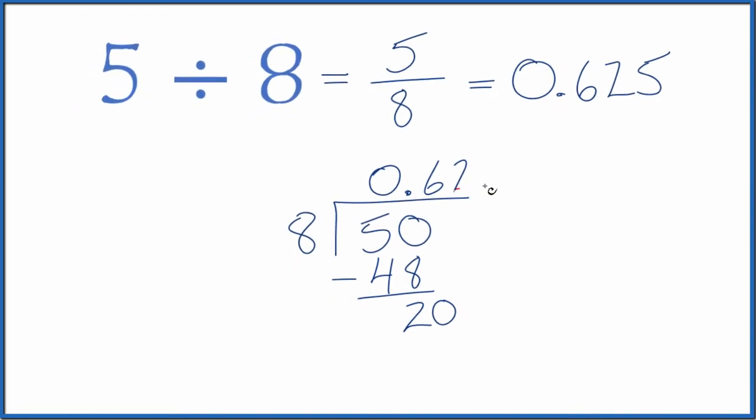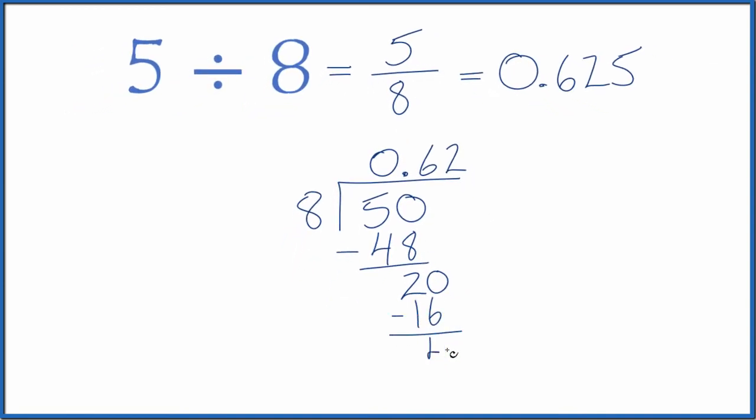Two times eight, that's 16. We subtract, we get four. We call it 40. We move over one and five times eight, that's 40.